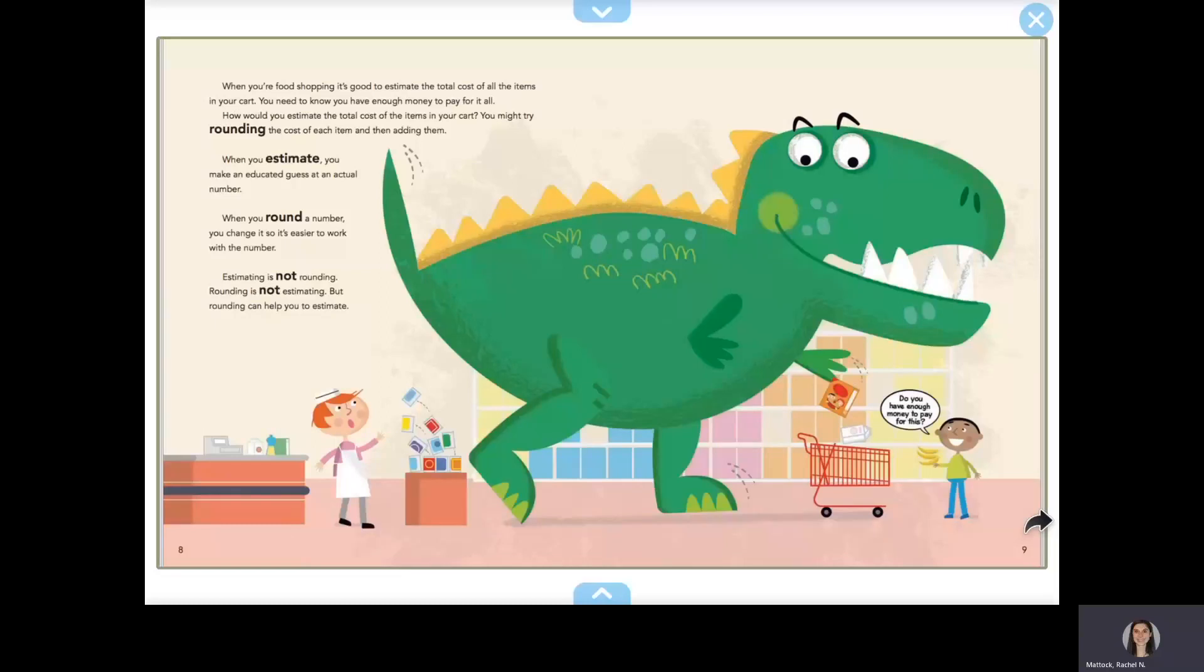When you estimate, you make an educated guess at an actual number. When you round a number, you change it so it's easier to work with. Estimating is not rounding. Rounding is not estimating. But rounding can help you estimate.